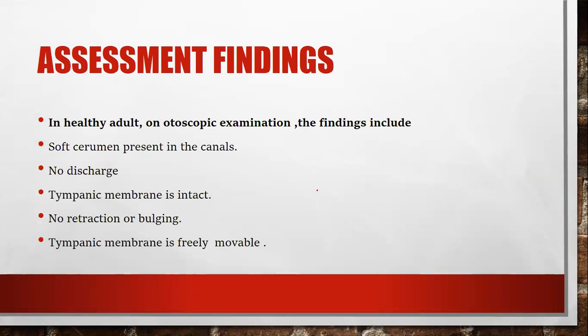The assessment findings of the ear canal and eardrum in a normal patient: soft cerumen will normally be present in the ear canal with regular wax production. There should be no discharge — normally a patient does not have any discharge in the ear canal. If the patient has an infection, there may be different types of ear discharge — otorrhea — which can be serous, bloody, or a clear type. The tympanic membrane should be intact, with no retraction or bulging, and the tympanic membrane should be mobile.